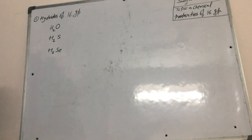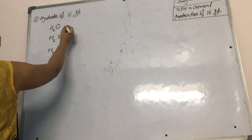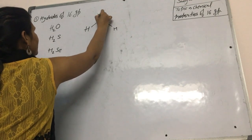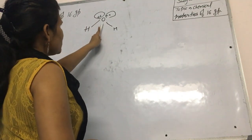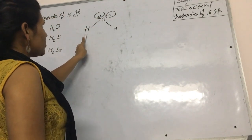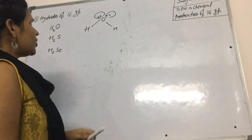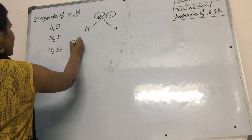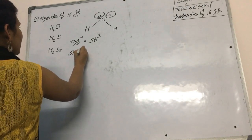Today I will discuss the structures of these hydrides. Firstly, I will discuss the structure of water using VSEPR theory. According to that, oxygen shows lone pair-lone pair repulsion, and oxygen-hydrogen shows lone pair-bond pair repulsion, and O-H to O-H bond shows bond pair-bond pair repulsion. Because of lone pair-bond pair repulsion, its hybridization will be sp3 and its shape will be bent.